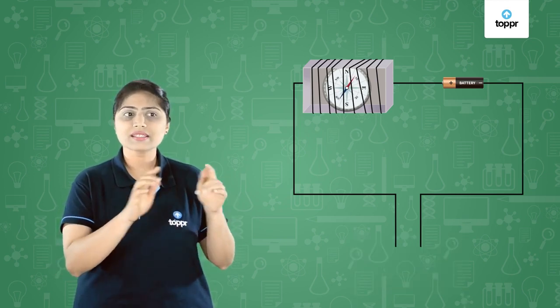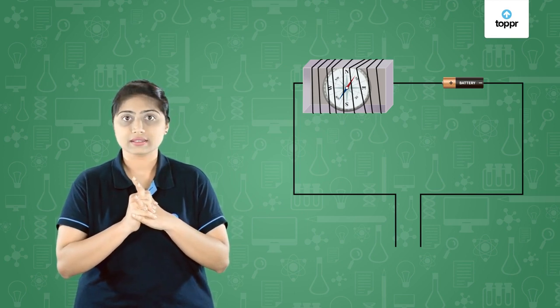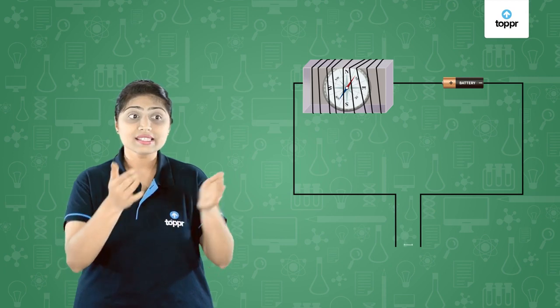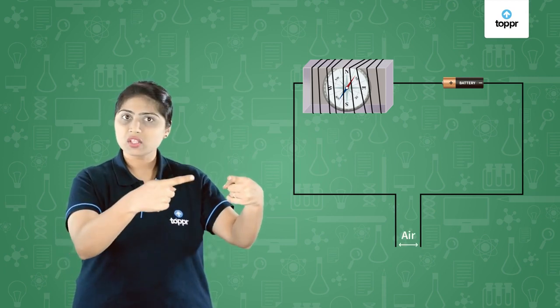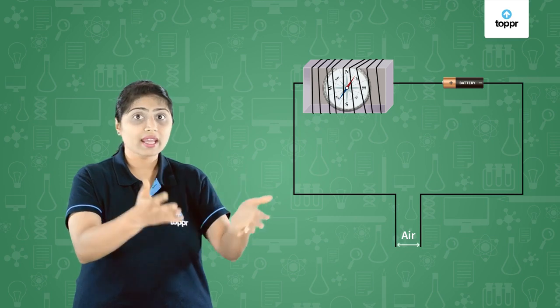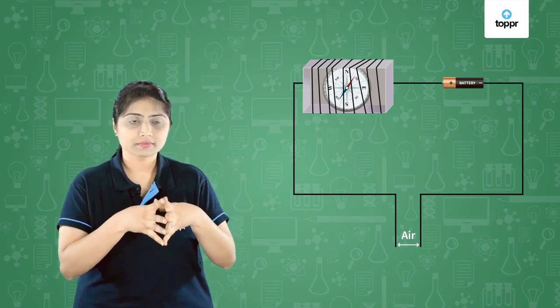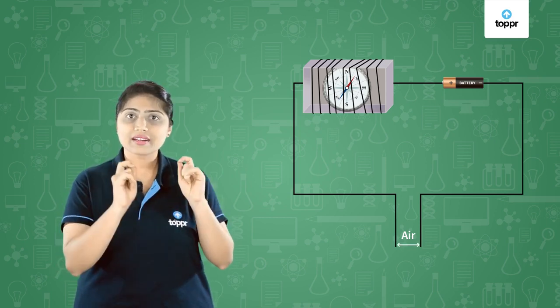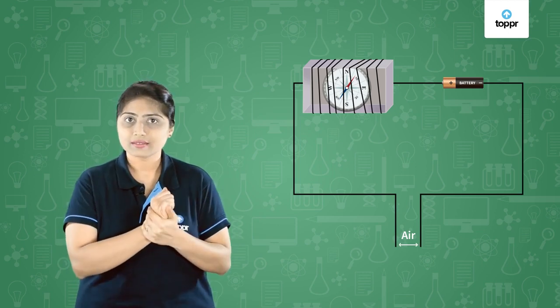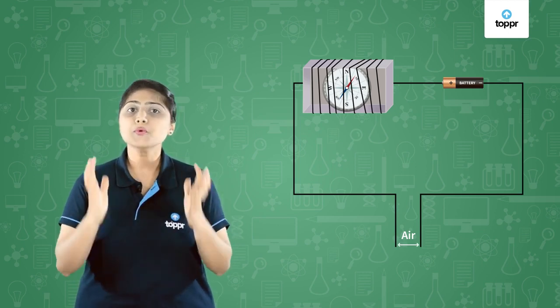Right now we have placed nothing between the two ends of the wire. But there is something between the ends of the wire which is not seen but is still present, and that is air. So we can test whether air conducts electricity or not. Check the magnetic needle — does it show any deflection? No. That means electricity cannot pass through air, so air is a poor conductor.